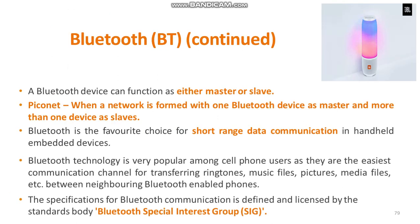Bluetooth follows a master-slave relationship — either it acts as a master or a slave. When a network is formed with one Bluetooth device as a master and more than one device as slaves, that network is called a Piconet. This is a good choice for short-range communication in embedded devices and is used in cell phones for transferring files, pictures, and media files. The specifications are defined and licensed by the Bluetooth Special Interest Group (SIG).